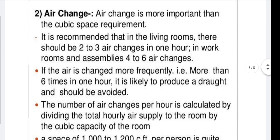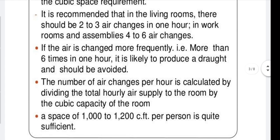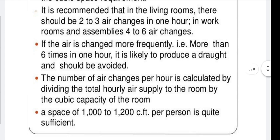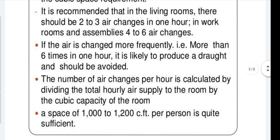Second standard: air changes. Air change is more important than the cubic space requirement. It is recommended that in living rooms there should be two to three air changes per hour; in workrooms and assemblies, four to six air changes. If air is changed more than six times per hour, it is likely to produce a draught and should be avoided. The number of air changes per hour is calculated by dividing the total air supplied to the room by the cubic capacity of the room. A space of 1000 to 1200 cubic feet per person is quite sufficient.